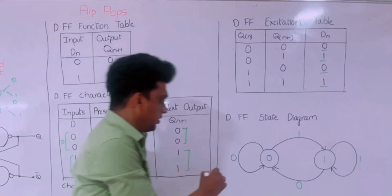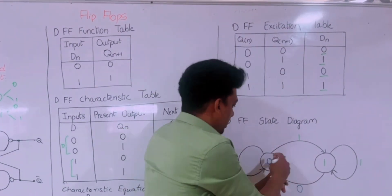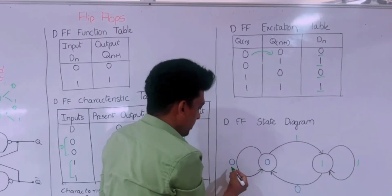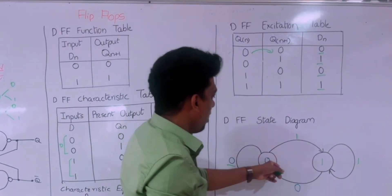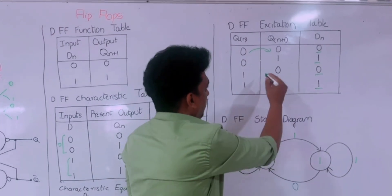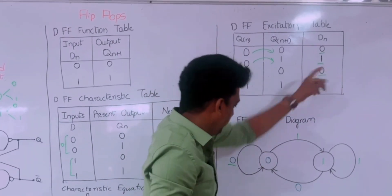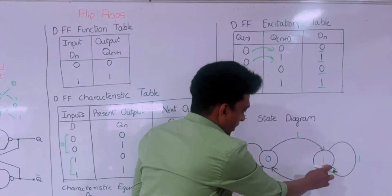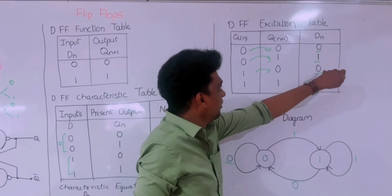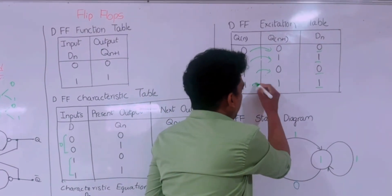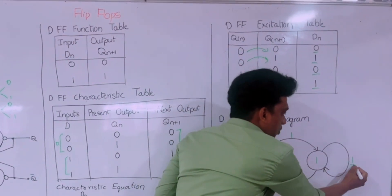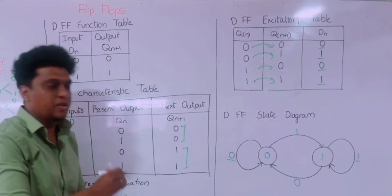Then comes the state diagram. We have state 0 to 0 — when moving from 0 to 0, the input is 0. And for 0 to 1, the input is 1. Then 1 to 0 — the input is 0. And it comes from state 1 to state 1 means the input is 1. So this is the simplification of the state diagram, showing how the D flip-flop is working.